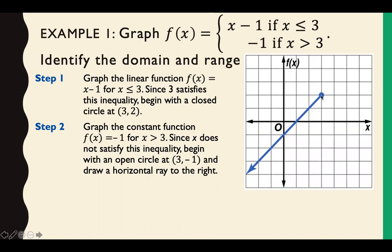So here's our first part. We graph our first one here at 3, 2. It's a closed circle because it has the equal to, and then we have x minus 1 graphed. We then graph y equals negative 1 or f of x equals negative 1 and it does get an open circle because we have a less than symbol.